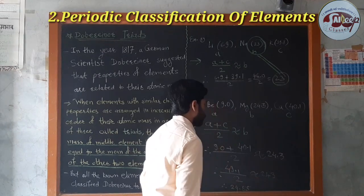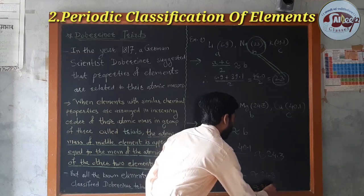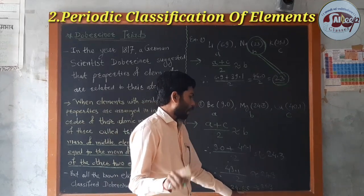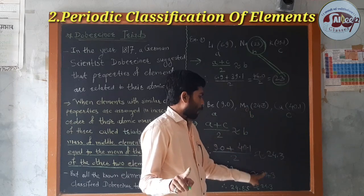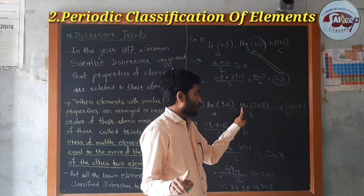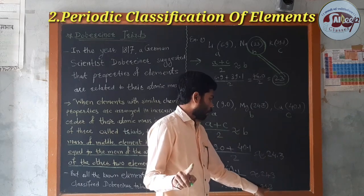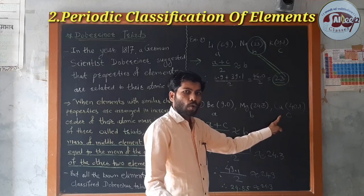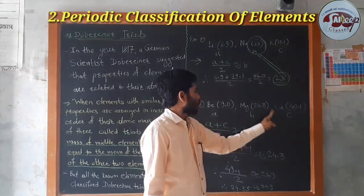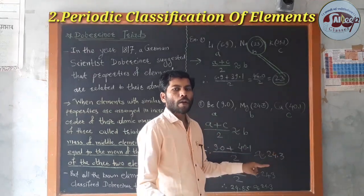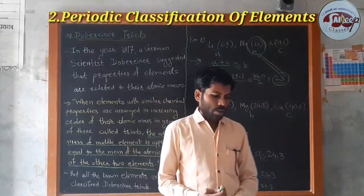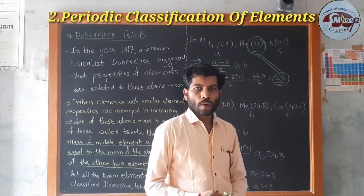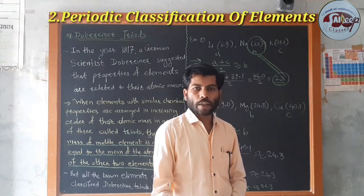So 24.5 is approximately equal to 24.3, confirming that beryllium, magnesium, and calcium form an example of Dobereiner's Triads. Various other examples are given — you can solve them in your notebook. If you have any doubts or difficulty, you can contact me.